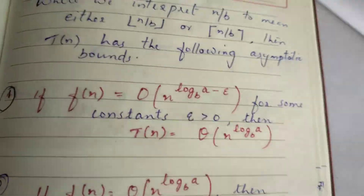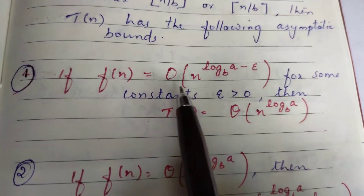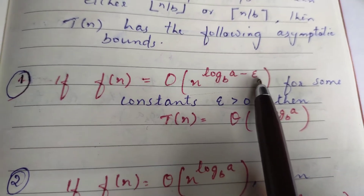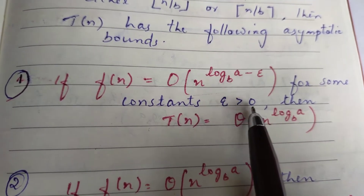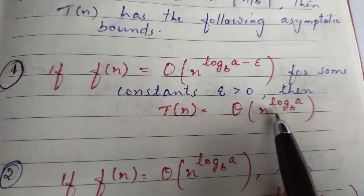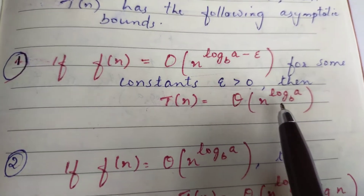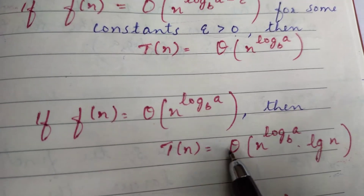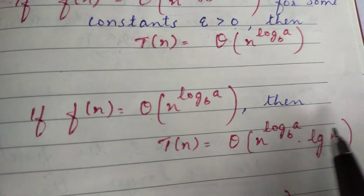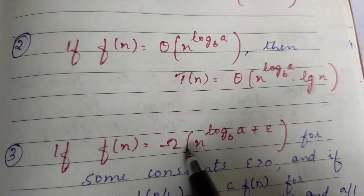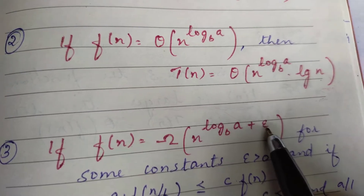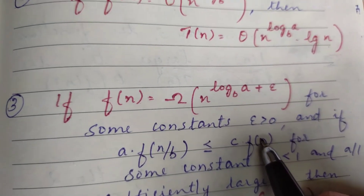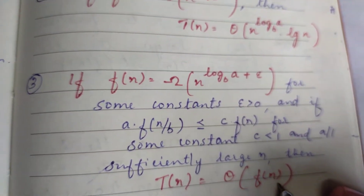In Case 1, if f(n) is O(n^(log_a base b) minus epsilon), where epsilon is a constant greater than 0, then T(n) = Theta(n^(log_a base b)). In Case 2, if f(n) is Theta(n^(log_a base b)), then T(n) = Theta(n^(log_a base b)). In Case 3, if f(n) is Omega(n^(log_a base b) plus epsilon), where epsilon > 0, and the regularity condition is satisfied, then T(n) = Theta(f(n)).